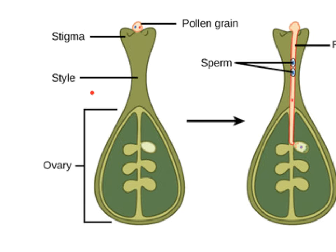Here is one carpel, and as you can see, there are various parts. The top part here is called the stigma, and the stigma has a sticky substance on it that the pollen grain can stick to during pollination. Next, we have this neck-looking structure here, and that's the style of the carpel. And down here, within the larger portion of the carpel, we have the ovary.